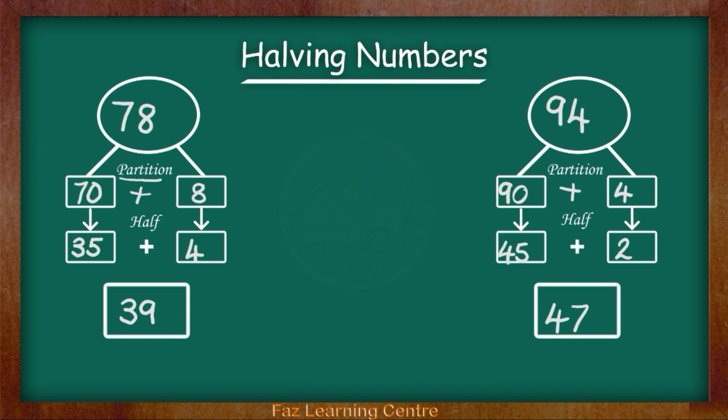Let's recap the steps you need to do. The first step you need to do is you need to partition your two digit number. Then once you found your findings once you have partitioned your two digit number then you will have to half it. Once you have halved your number you have to just add them together to get the answer. Step one, partition. Step two, half your answer. Step three, add your answer.